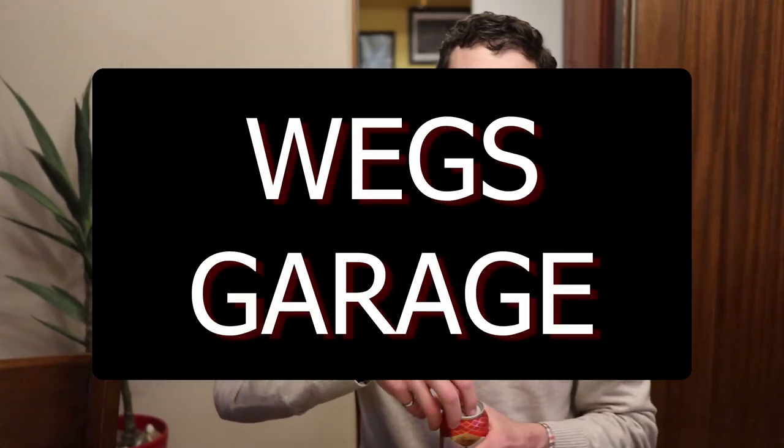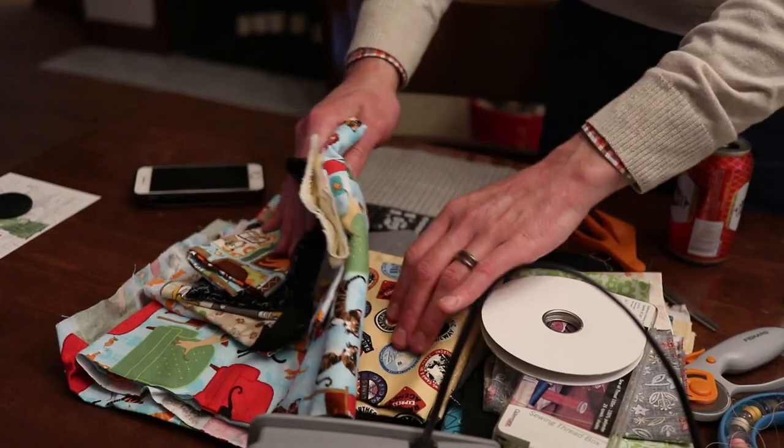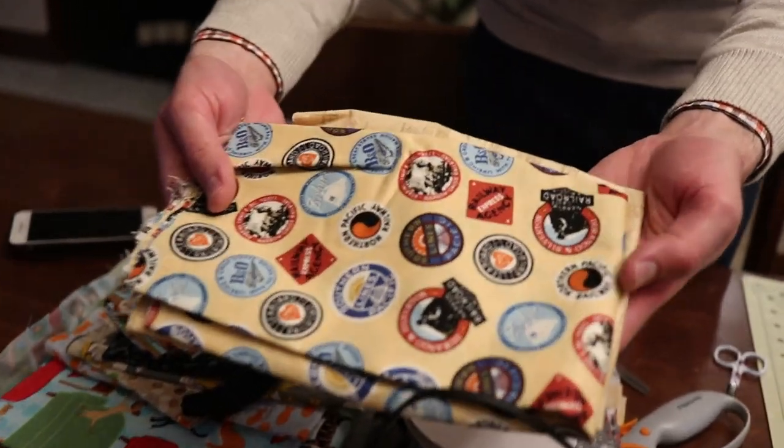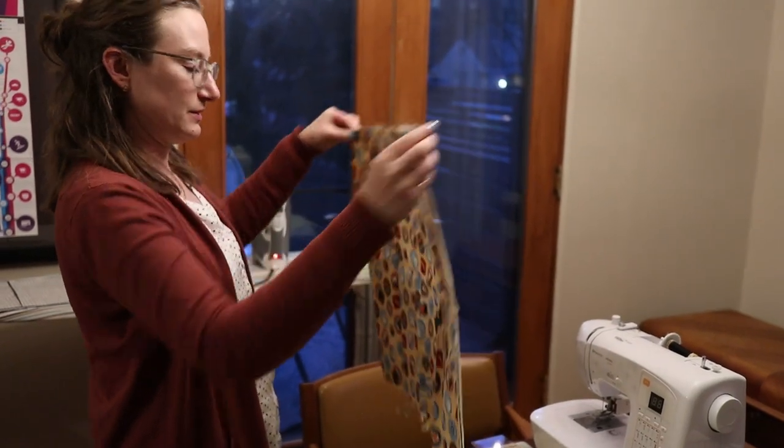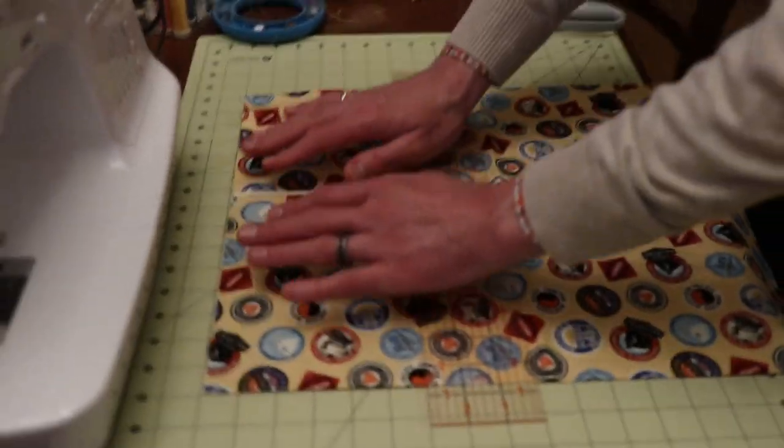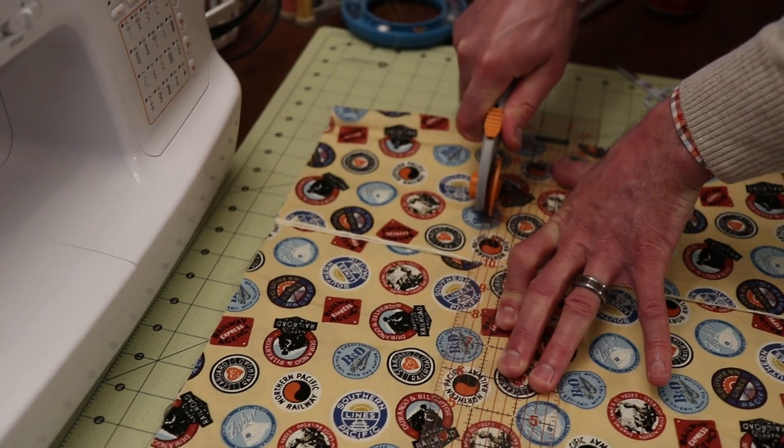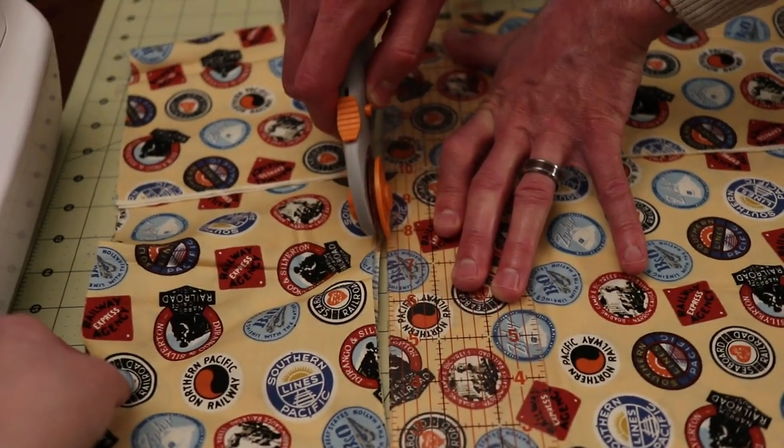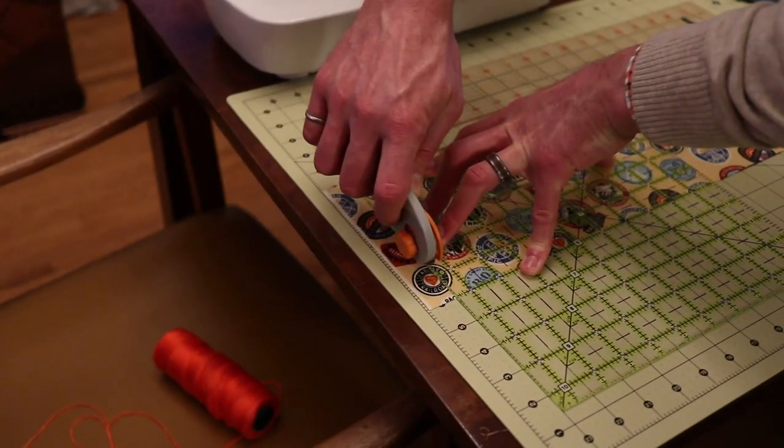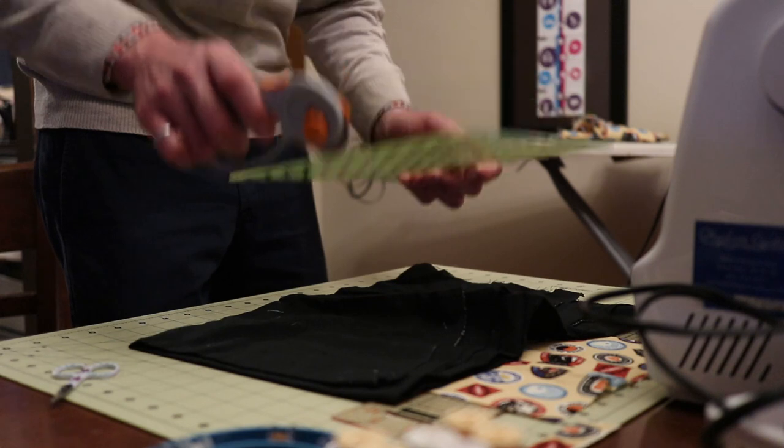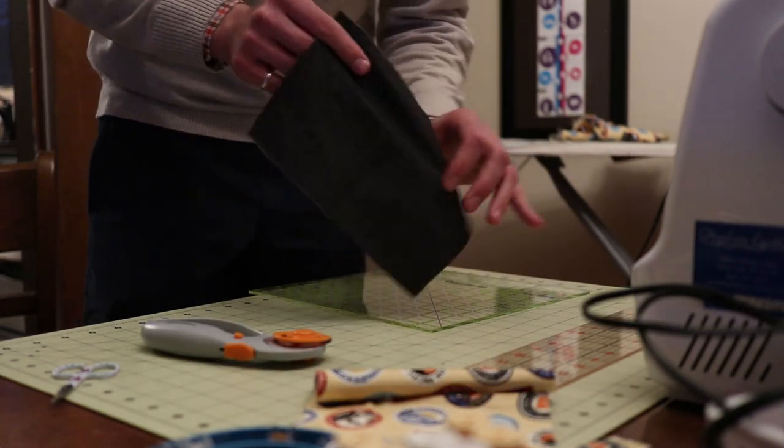All right. Step one, gotta crack a beer. What do I do now? All right, so we need to cut out two pieces that are six by nine inches. Now I get to do that one more time. All right, awesome. Look at that. Perfect piece.